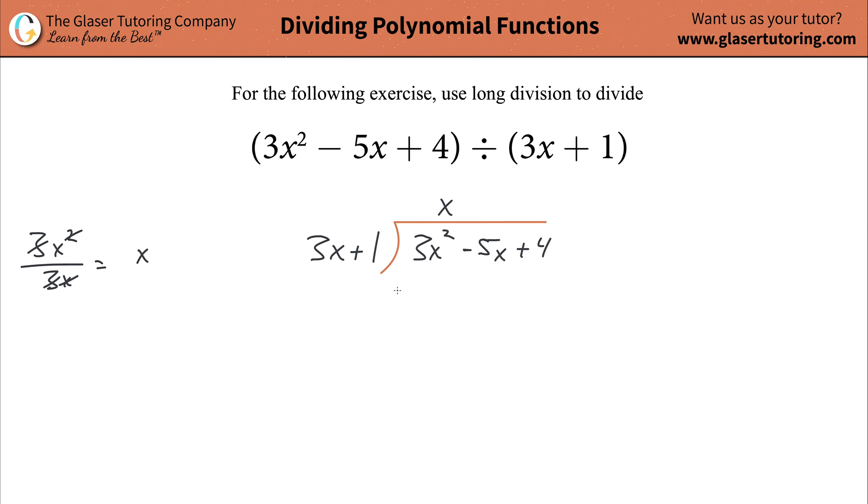Now what you're going to do is set up your subtraction here. Put in a subtraction symbol and parentheses. Take this value of the quotient and multiply it by each term in your divisor. So you're going to take x times 3x, which is 3x squared. If you did this right, it should match this. Then take the x and multiply it by positive 1. Obviously, that's just an x, or you can write in positive 1x.